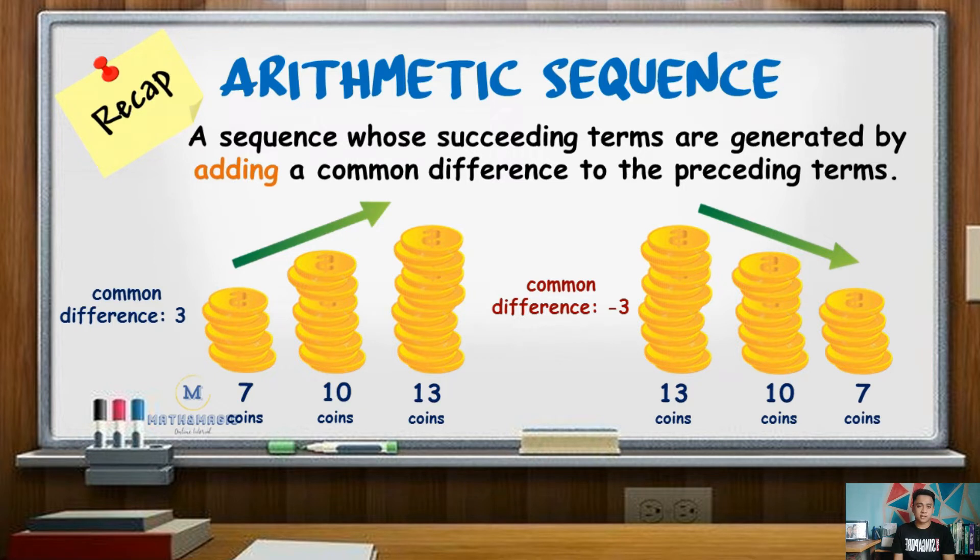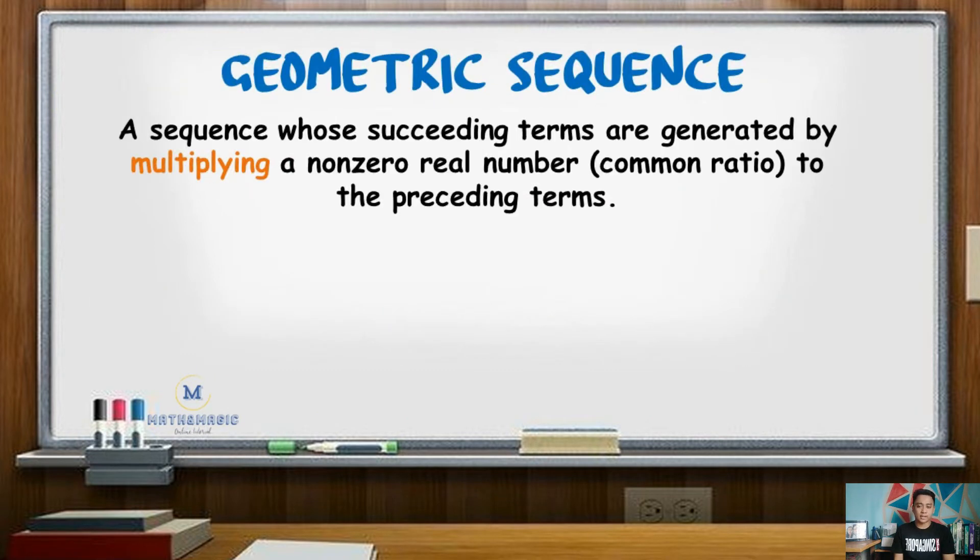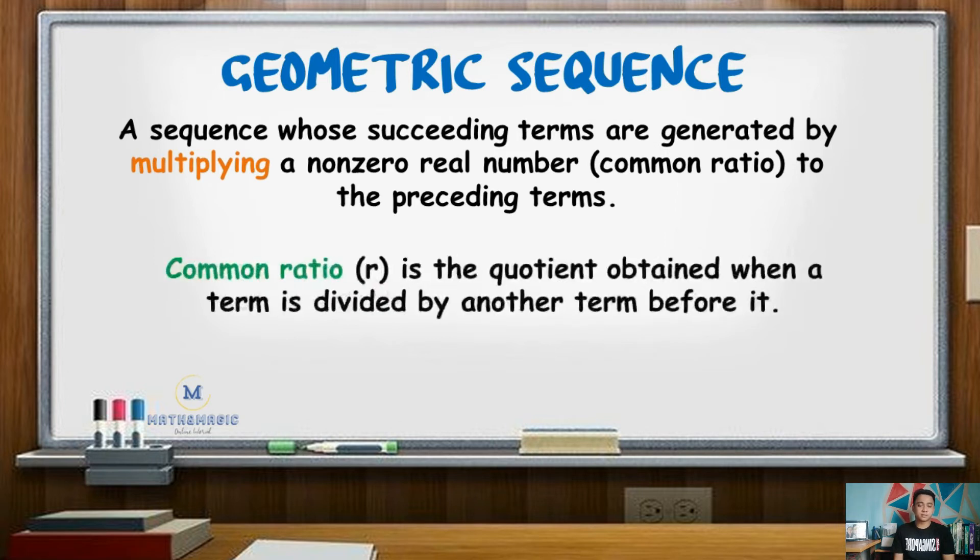In the case of a geometric sequence, the terms are generated by multiplying a non-zero real number, also known as the common ratio, to the preceding terms. Common ratio is the quotient obtained when a term is divided by another term before it. Formula for the common ratio may be r equals a sub 2 over a sub 1 and so on until a sub n over a sub n minus 1.